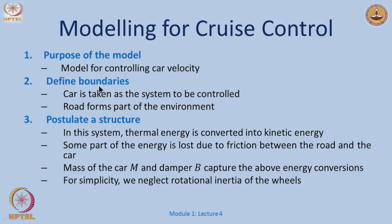What could be a typical structure here? There is a force, a displacement, and velocity. In this system the thermal energy from the engine structure is converted into kinetic energy or velocity. Some part of the energy is lost due to friction between the road and the car — we will not take into consideration thermal losses for simplicity. The car has a certain mass, and since there is some energy lost, a damping element is introduced in the model.